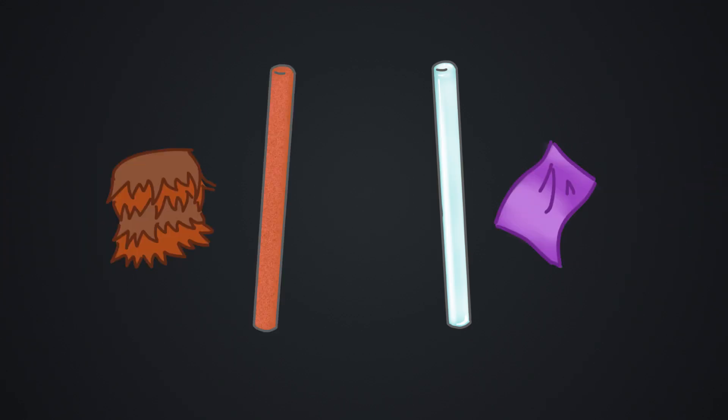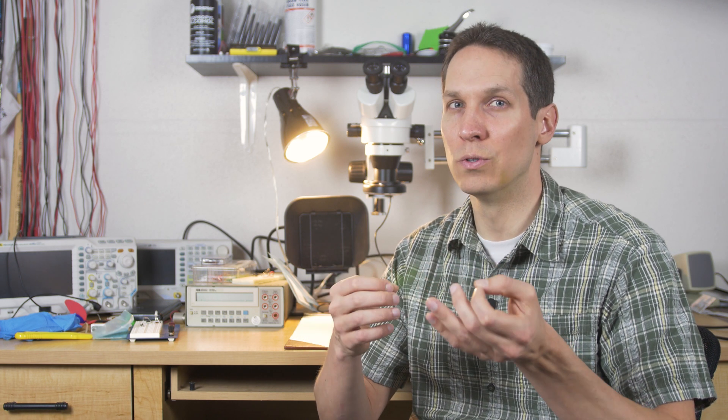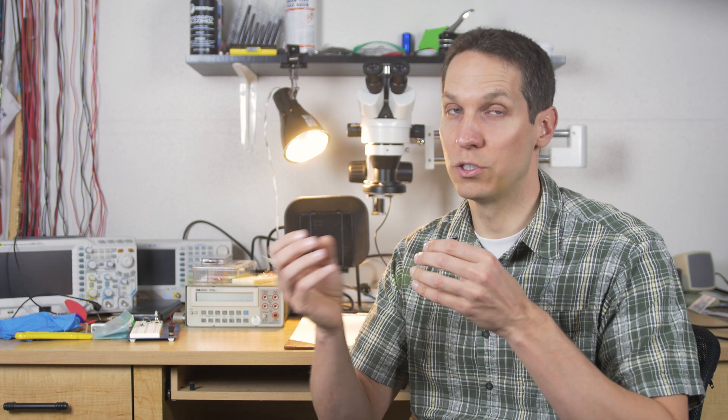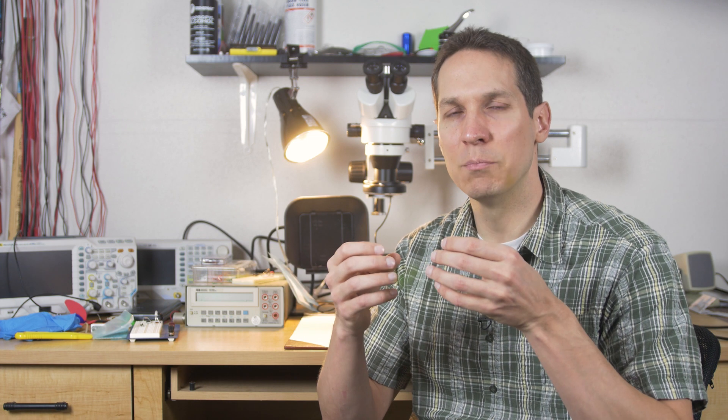Ben would rub a glass rod with silk and another rubber rod with fur while hanging those rods from string. To more easily emulate this experiment today, we can use a plastic rod and wool instead of rubber and fur. If he rubbed two glass rods with silk and brought them close together, or two rubber rods with fur and did the same, they would repel each other.